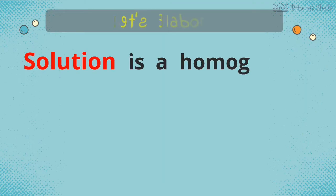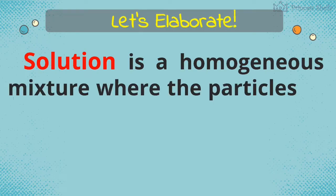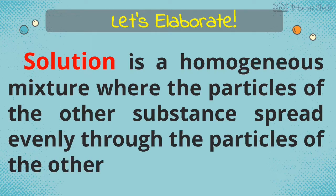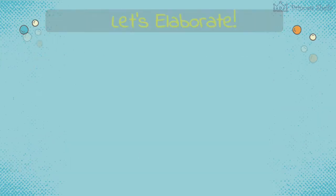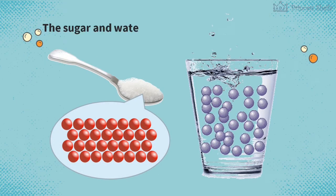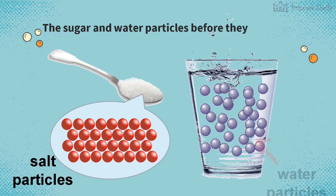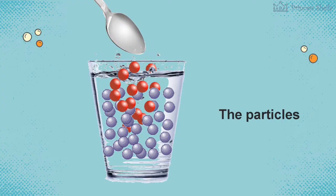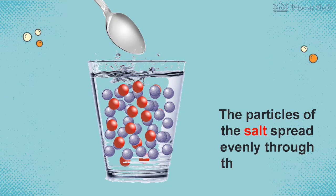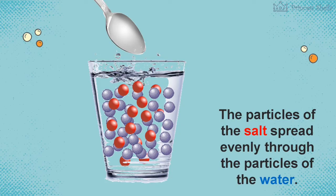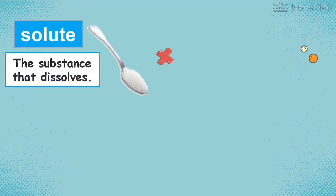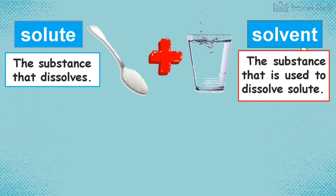A solution is a homogeneous mixture where the particles of one substance spread evenly through the particles of the other substance. When we mix the salt into the water, the particles of the salt spread evenly through the particles of the water. The substance that dissolves is the solute, while the substance that is used to dissolve the solute is the solvent. When combined, they form a solution.